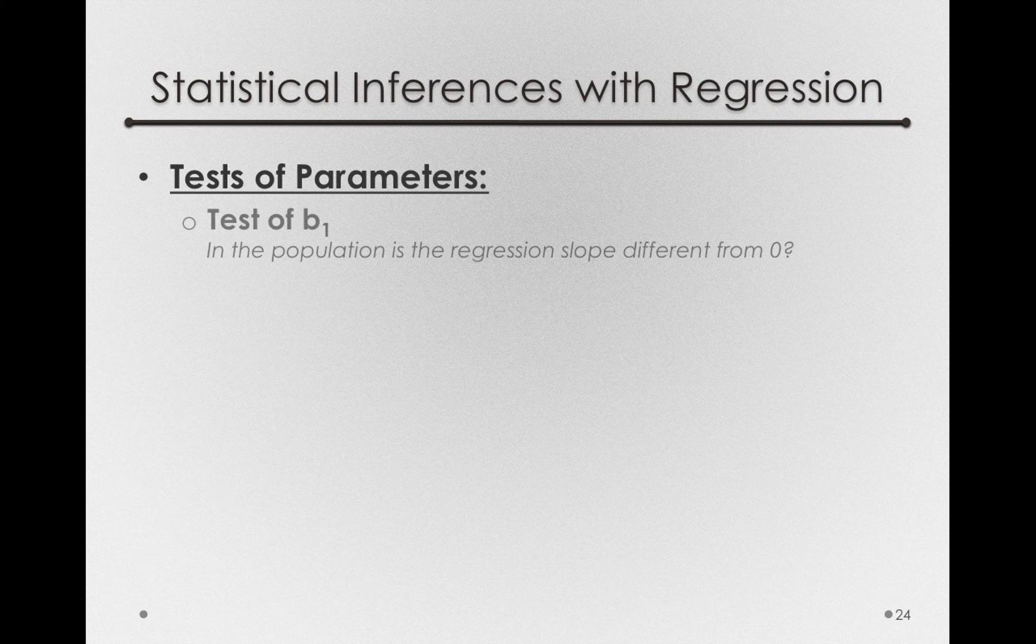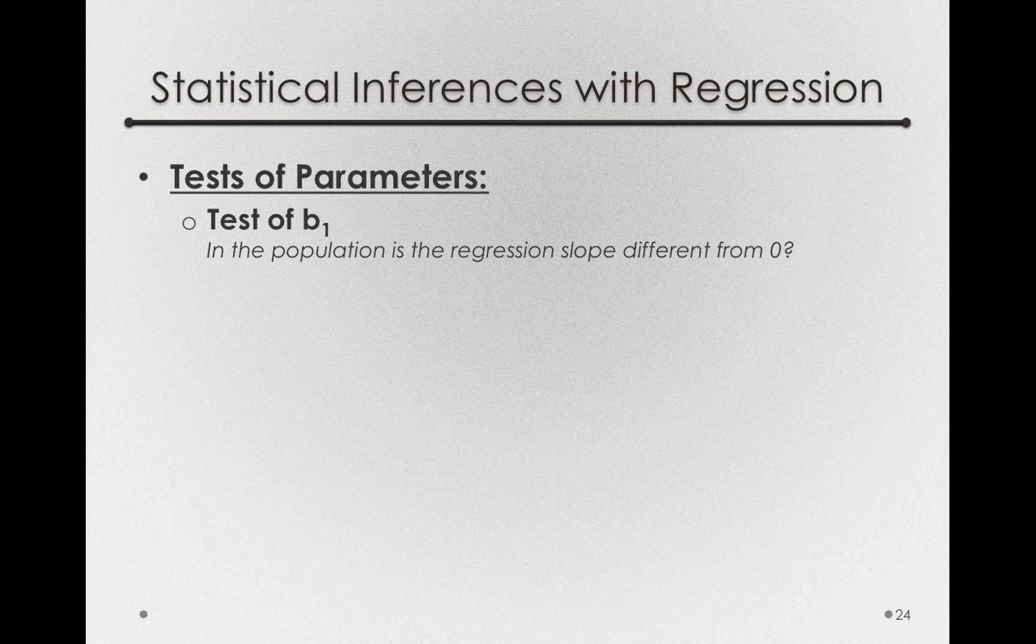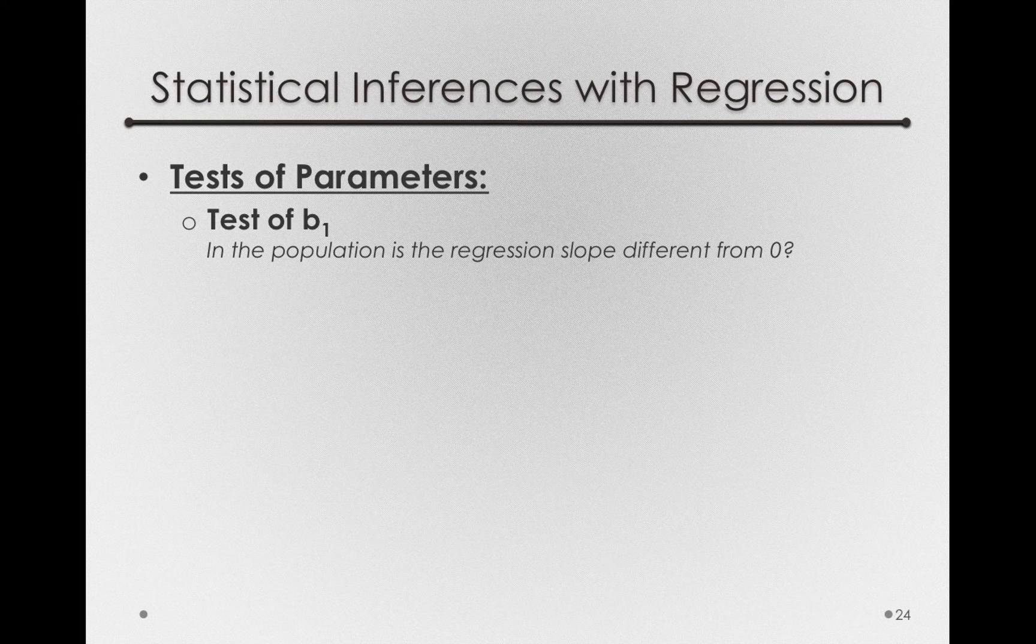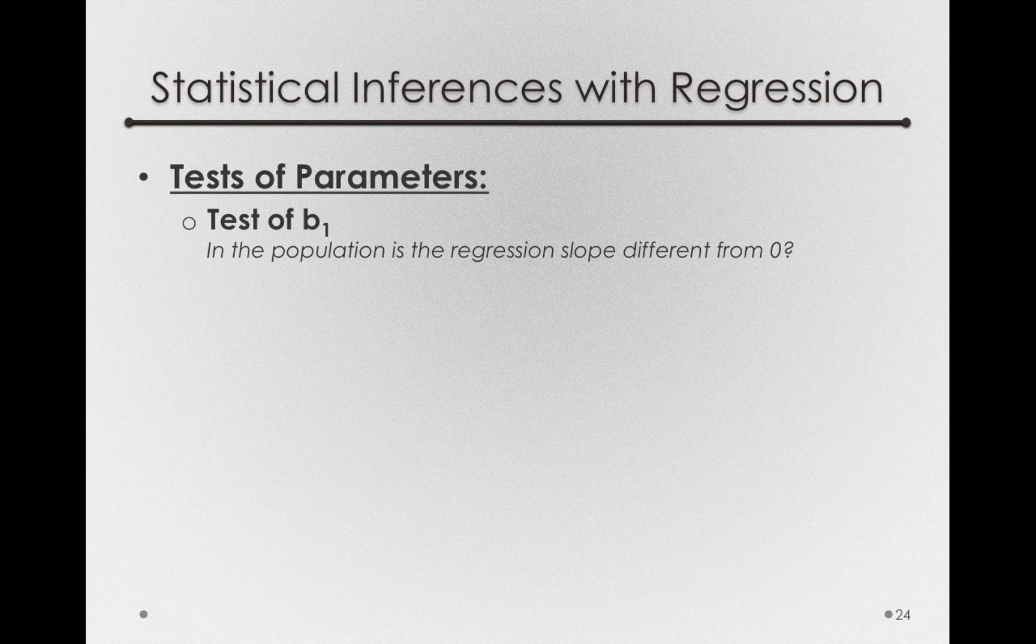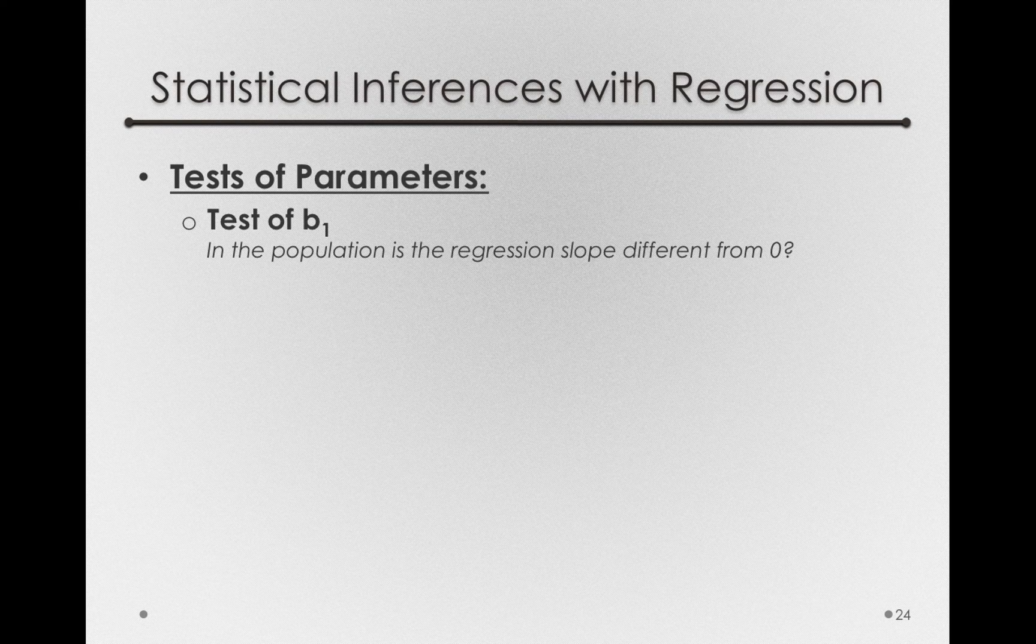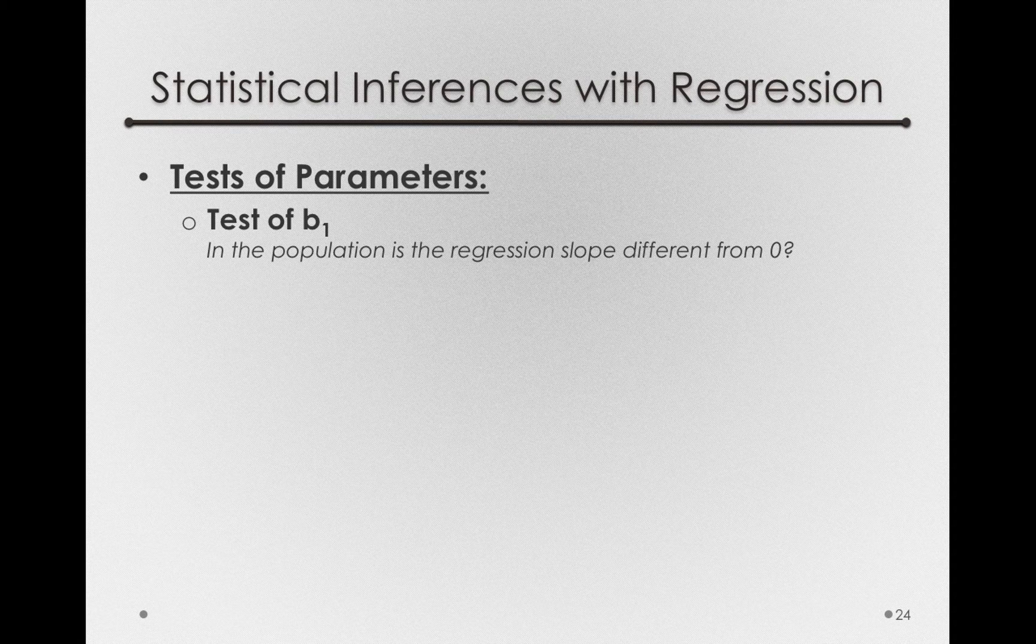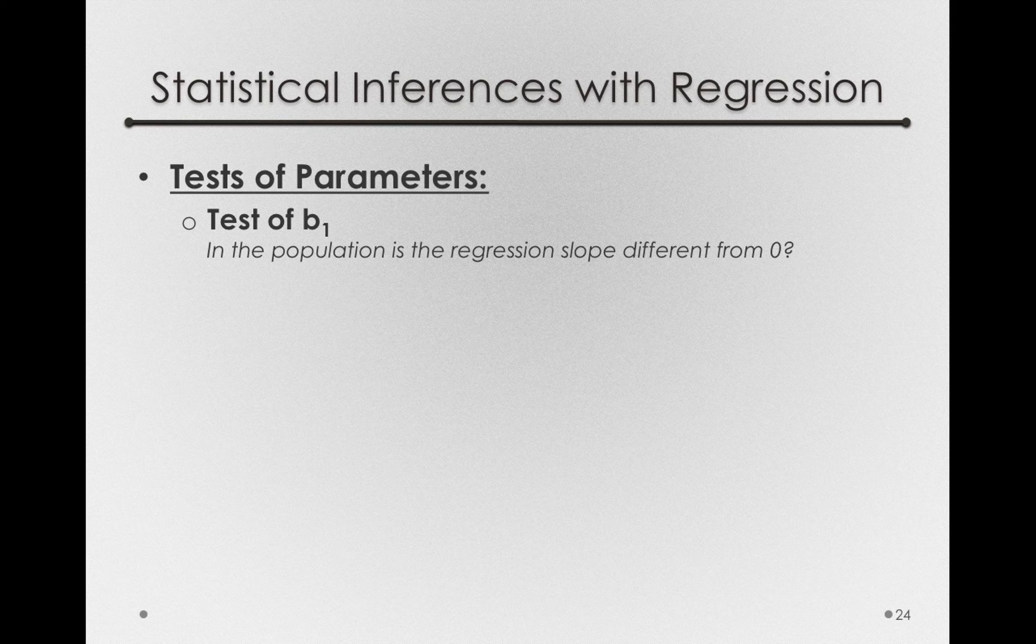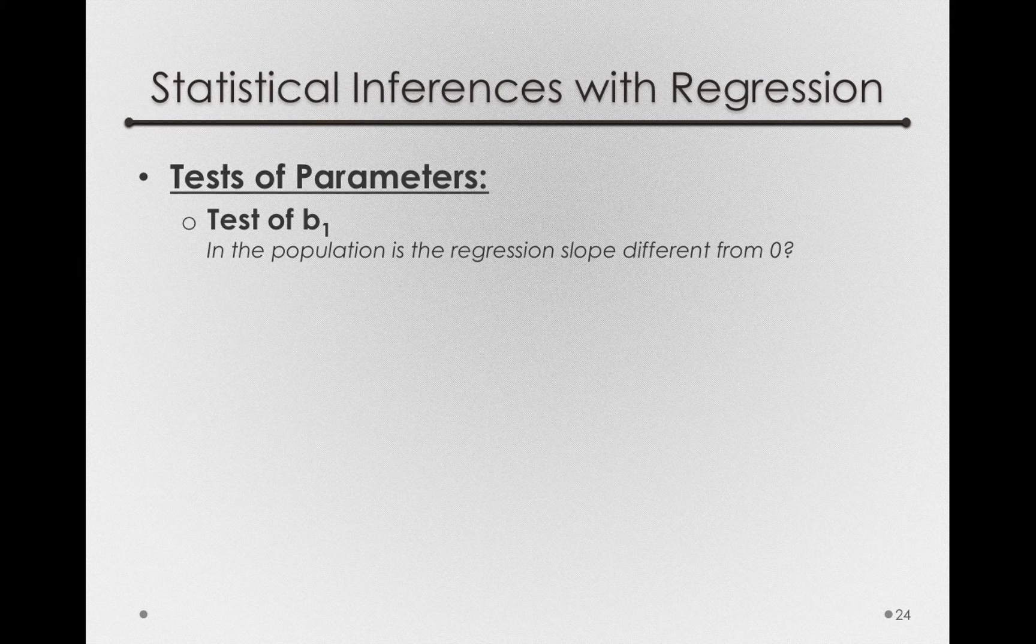The first is the test of B1. That is a question of if in the population the regression slope is different from zero. Remember that we can form a sample estimate that is different than the population parameter. In fact, that will always happen, and that's sampling error. So even if B1 in our sample, the slope in our sample, is different from zero, that's not necessarily good evidence that in the population the slope is different from zero. So our test of B1 is really a test of beta1 and whether we have evidence in the population that beta1 differs from zero.